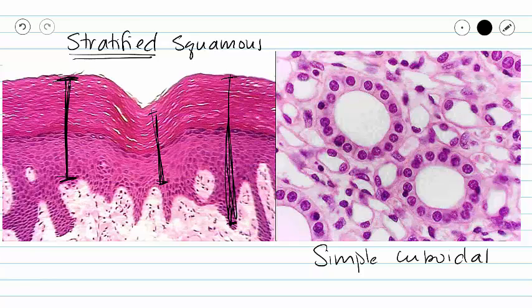Looks like I accidentally erased some of that there. Stratified means that we have multiple layers. Squamous means that the cells on our apical layers are squamous in appearance. Here is simple cuboidal epithelium on the right.